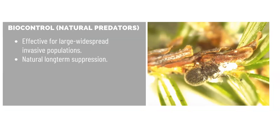Biocontrol, or natural predators, can be used as an effective control method for large, widespread invasive species populations — they need food to survive, which is why this is best for large populations. It serves as a natural solution for long-term suppression of a species. There are many examples of biocontrol being used in New York State. Pictured here is the Galerucella lady beetle, one of the biocontrol agents currently used to suppress the invasive forest pest hemlock woolly adelgid. I'm going to send a resource for you to learn more about biocontrol in your follow-up email.